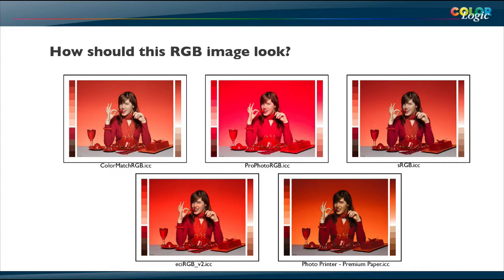Very often people forget to assign the profile to the image and then provide it to somebody else. That person has no idea what to do and will probably assign the wrong profile — a very common wrong assumption being sRGB. The result is the lady looks a little pale, the colors are more orange, very washed out, the contrast is completely different. I get wrong color output, and the only thing forgotten was assigning the profile and putting it into the PDF.